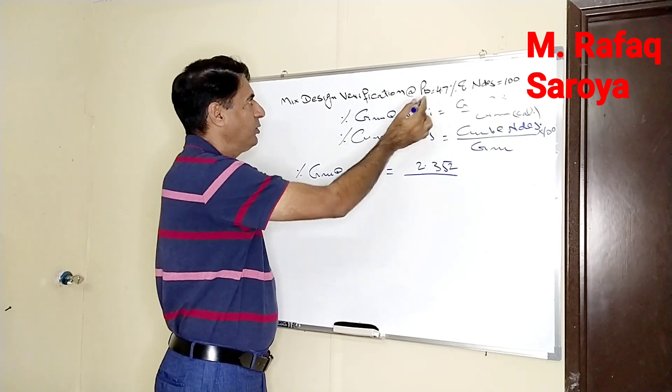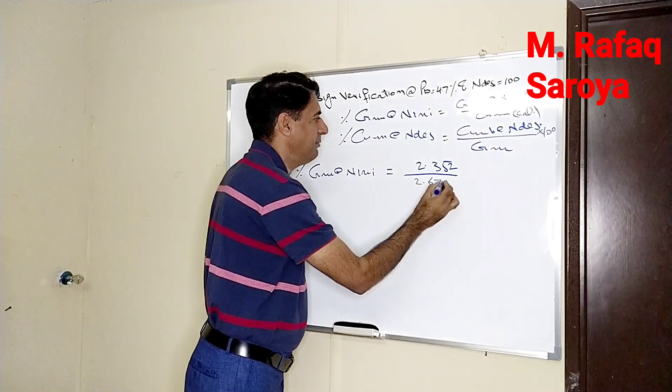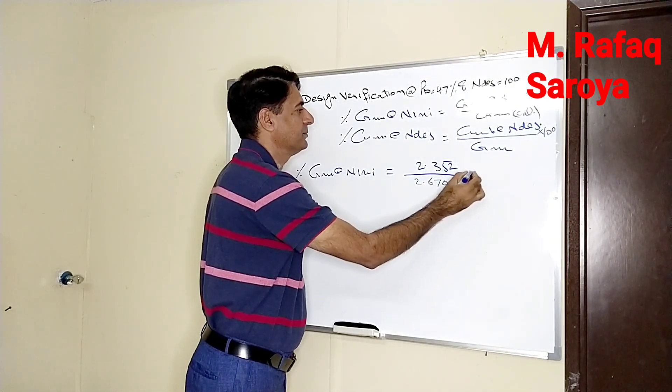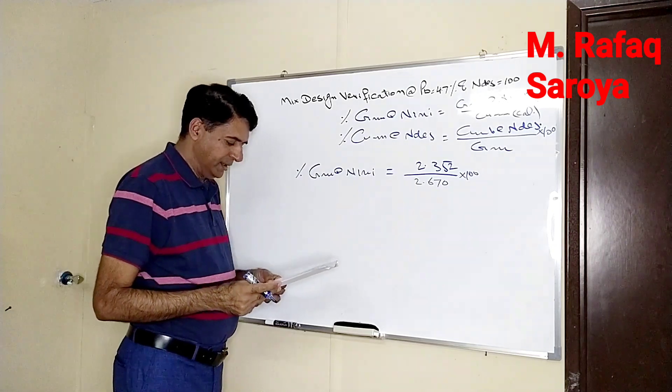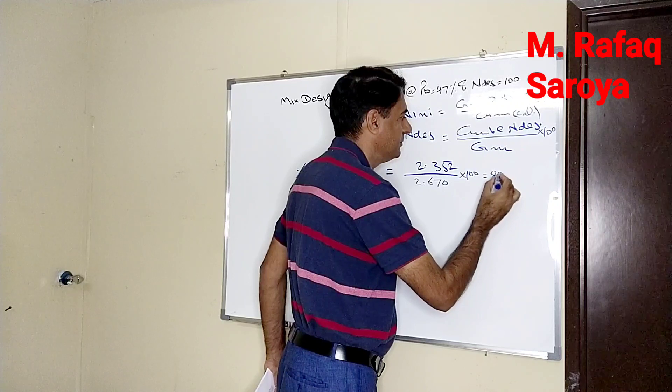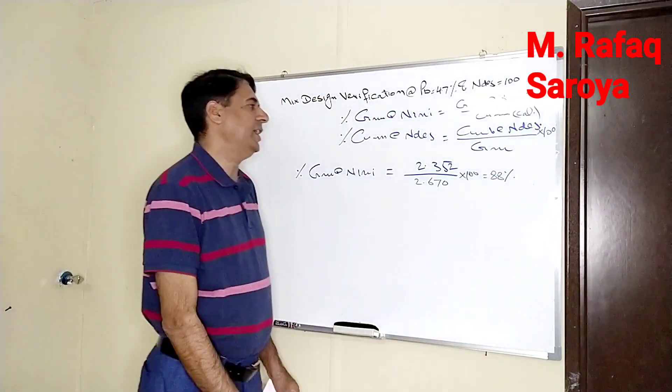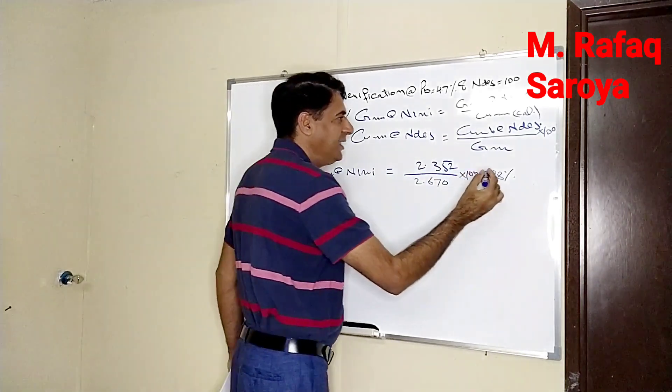And how much is the GMM at this amount of the binder content? 2.670 and 100%. When we make the calculation of this equation, its answer comes out to be 88%. Here I would like to tell you the maximum allowable percentage of GMM at this point should be less than 89%.